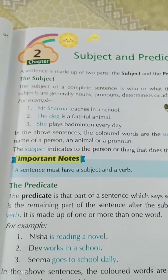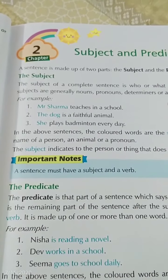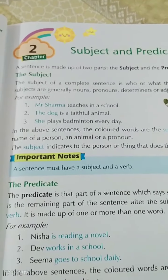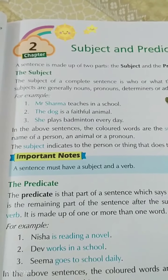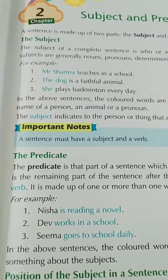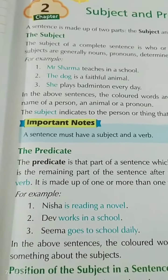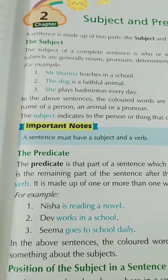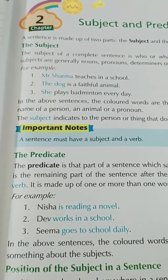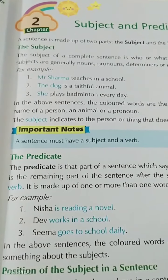A sentence must have a subject and a verb. Hope you all have understood the subject. The subject is the name of a person, animal, or a pronoun.